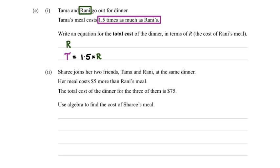Now the first part is asking us to write an equation for the total cost of dinner in terms of R. So we can say the total cost of dinner would equal the amount Tama spent plus the amount Rani spent. So T plus R. But we know that T could be written as 1.5R. And 1.5R plus Rani's cost, so this would be 2.5R.